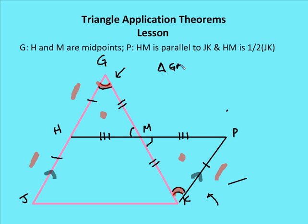Triangle GMH is congruent to triangle KMP by Side-Angle-Side. Because these two triangles are congruent, I can say GH is congruent to PK — marked with a single tick mark. So PK, GH, and HJ are all congruent to each other. By CPCTC, angle HGM is congruent to angle PKM, marked with double round marks.